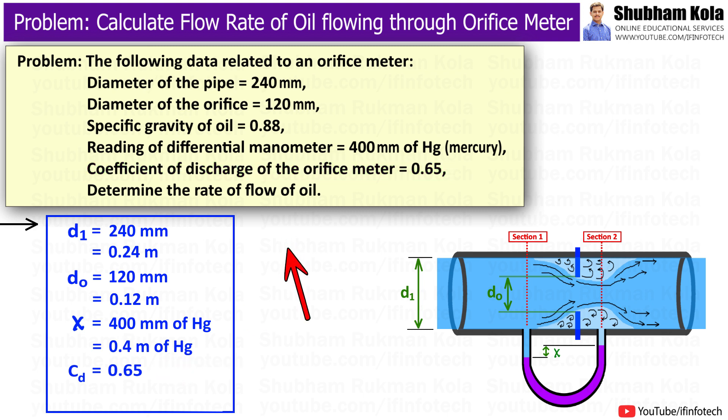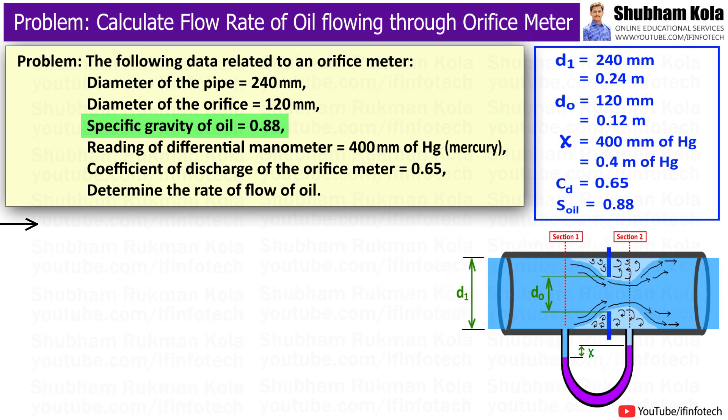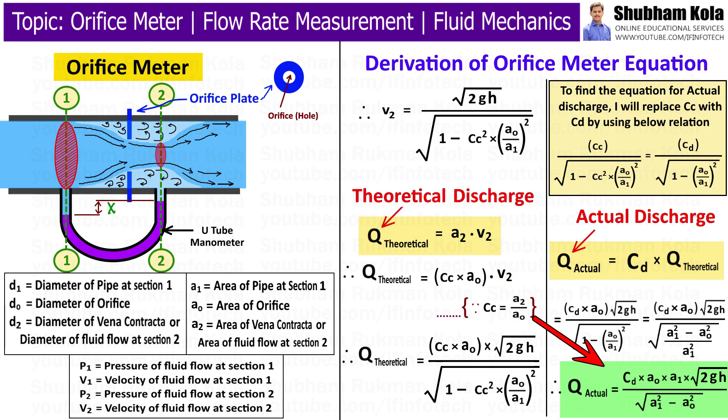In this problem, we want to find out the rate of flow of oil whose specific gravity is given as 0.88. So to calculate the flow rate of oil, i.e. discharge of oil, I will use the formula of discharge that we had derived in the previous video.